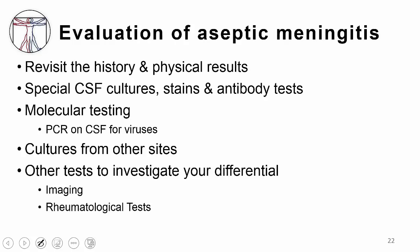If you have a patient with aseptic meningitis, you need to revisit the history and physical and ask more questions, making sure your exam was thorough. Thinking about the five different categories, you'll probably need to send special CSF cultures — like cultures for mycobacterium, stains, or antibody tests — looking for bacteria that don't grow on routine cultures. Molecular testing is very important: PCR on the CSF for viruses is standard to identify common causes of viral meningitis or encephalitis. Cultures from other sites might identify the organism, and for non-infectious causes, imaging and rheumatologic tests may be needed.